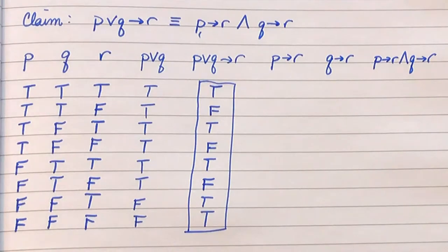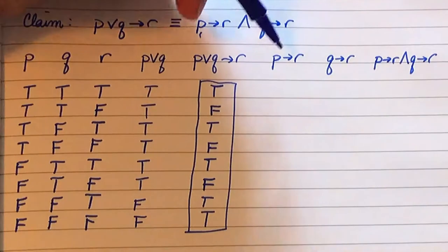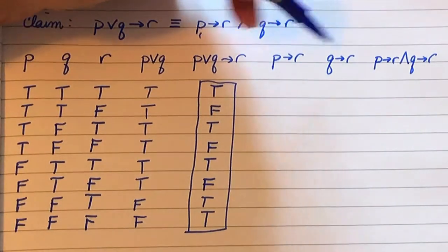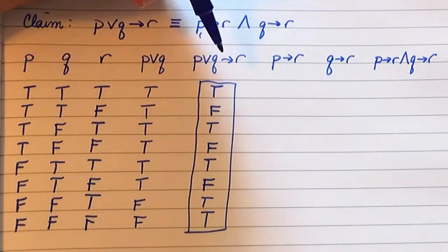Now we're going to proceed to the right-hand side. Now we have two conditionals here. We do not want to see P with a true and R with a false. We do not want to see Q with a true and R with a false.